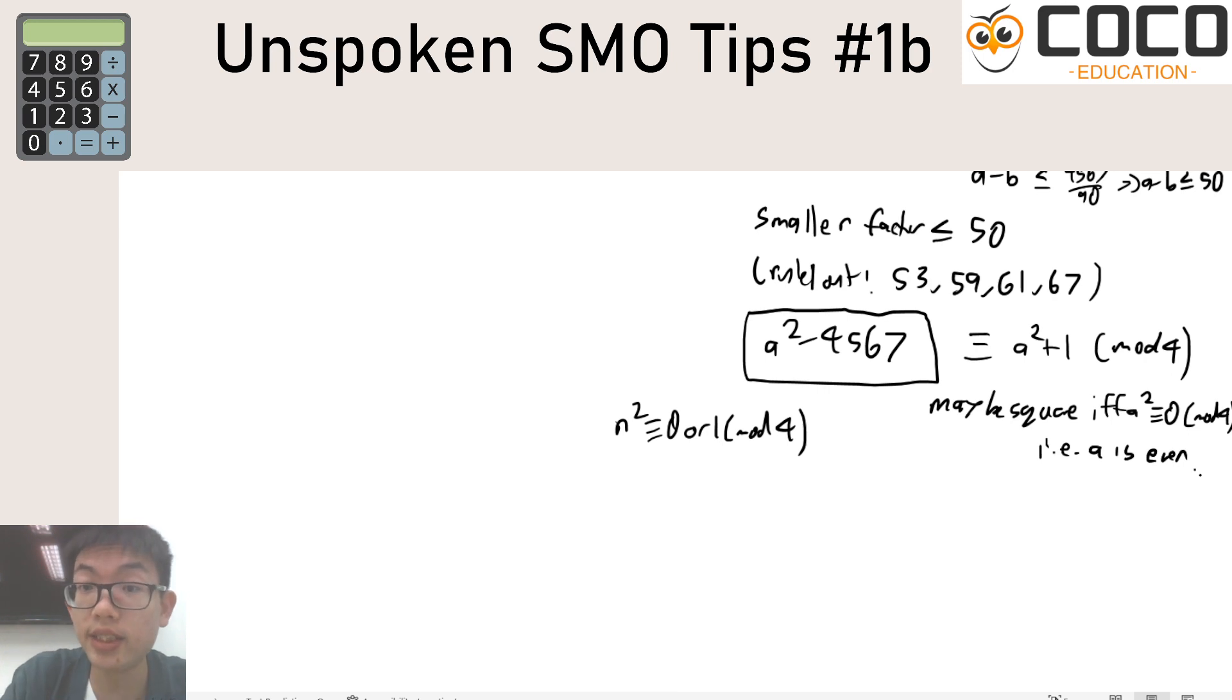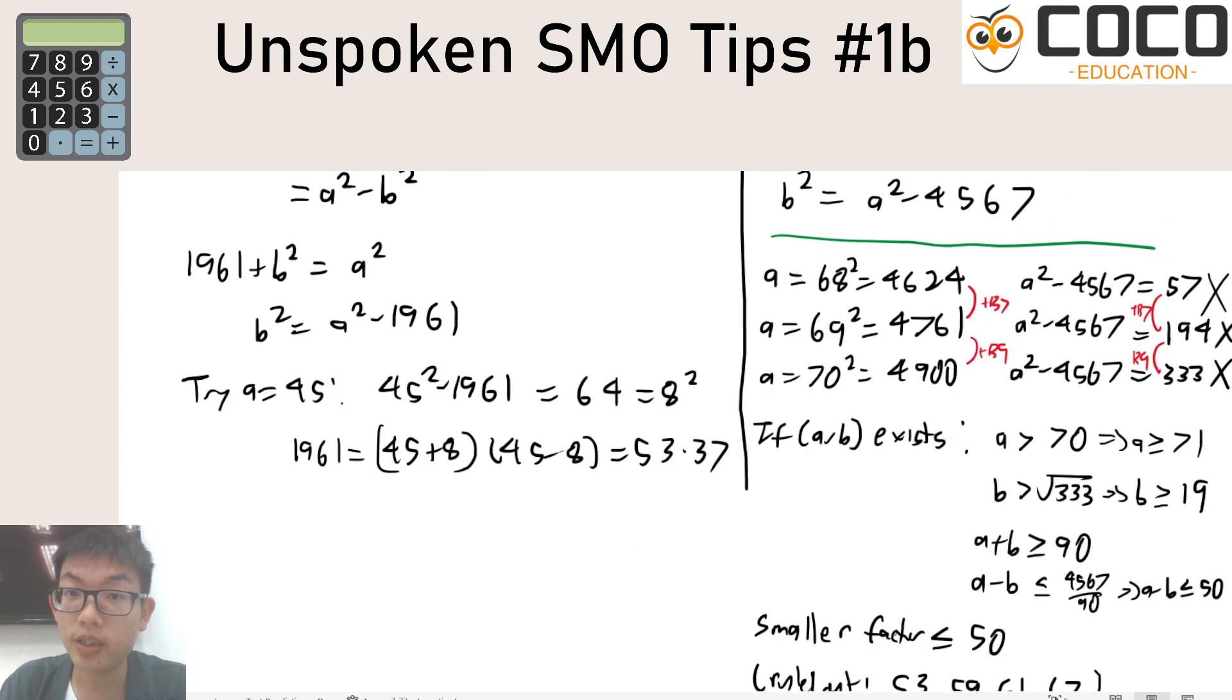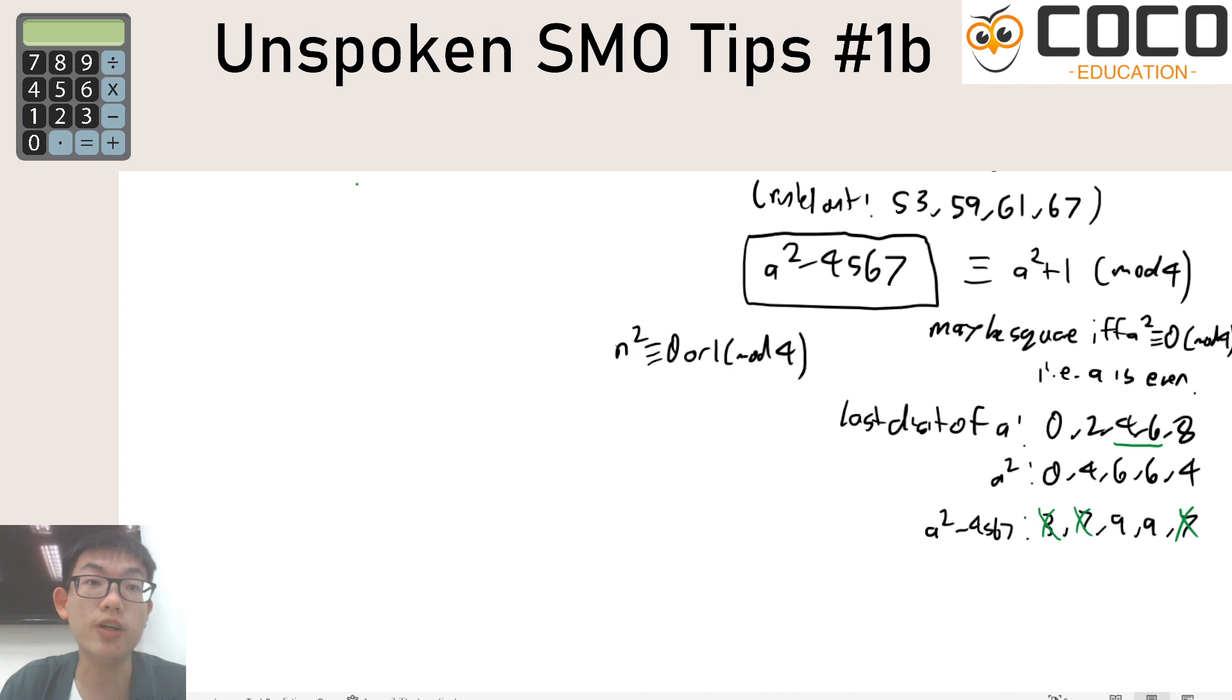In other words you only need to test even values. Now another simple one that we can use is the last digit. So now that it is even, we can look at the last digit of a and the last digit of a, you have got zero two four six eight, a squared would look like zero four six six and four, and so the a squared minus 4567 would give you three seven and nine nine and seven. Now once again if we're looking at the last digit of a square, three and seven both don't work, so the only candidates would be four and six, which means that you only need to jump all the way up to check 74 and 76 and then all the way up to 84 and you would have ruled out quite a lot.